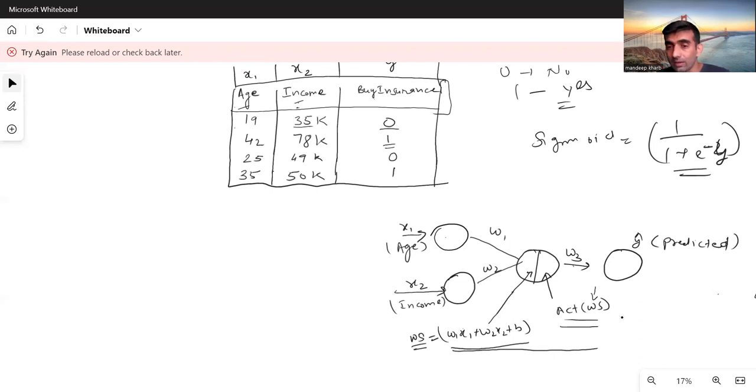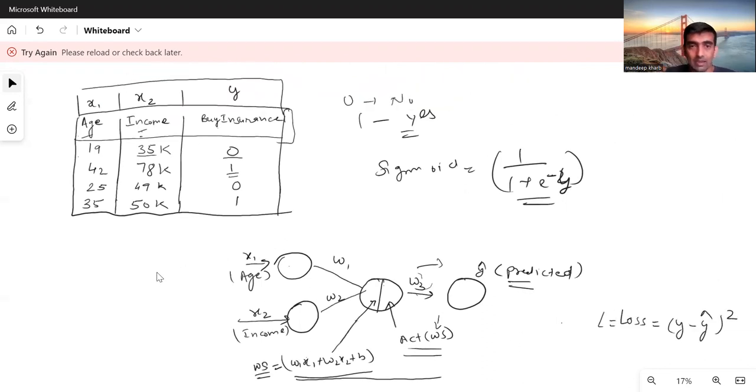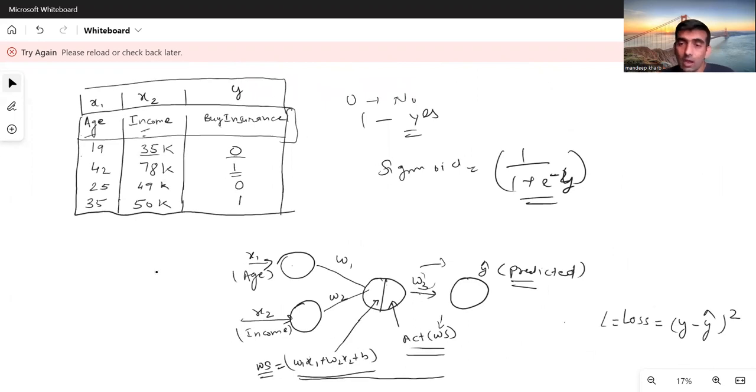Whatever output comes from here is multiplied with w3 and passed as an output layer. Let's say this is my predicted value. For example, in this scenario assume my predicted value comes out as one. Then I will check - but in actual, for this row my actual value was zero, but my model predicted one.